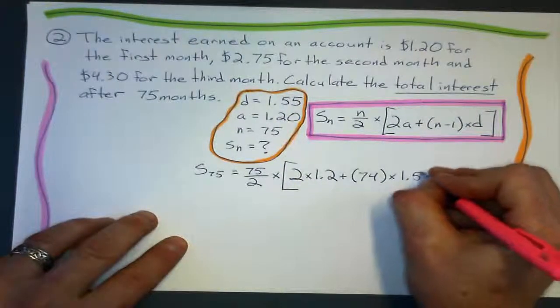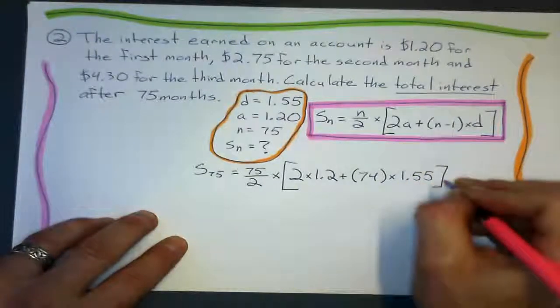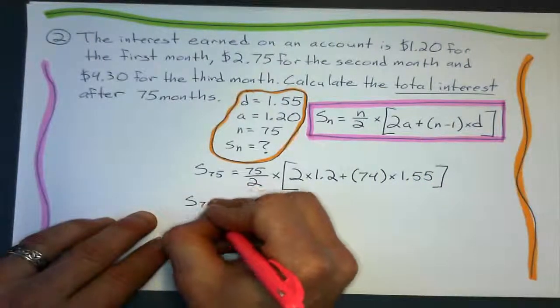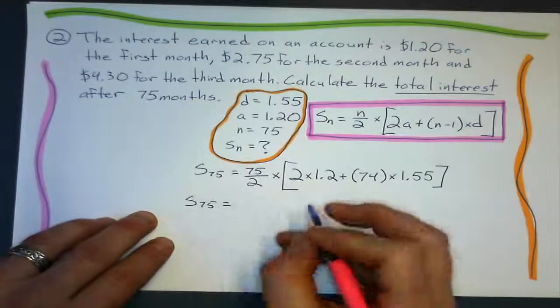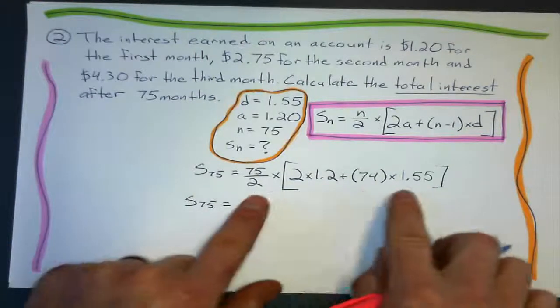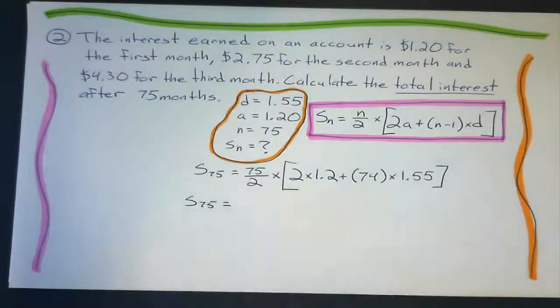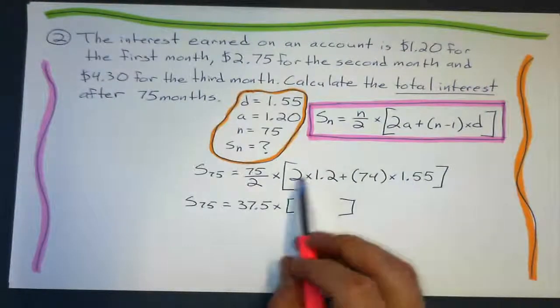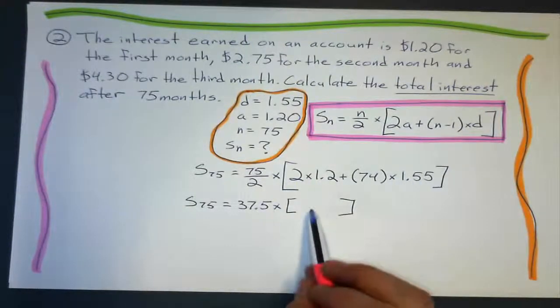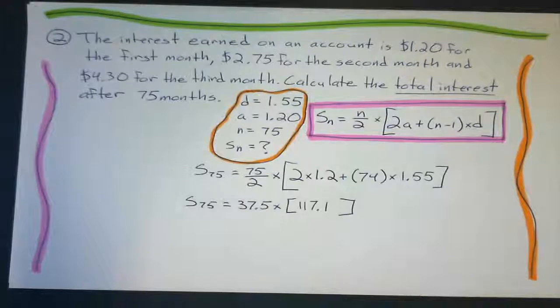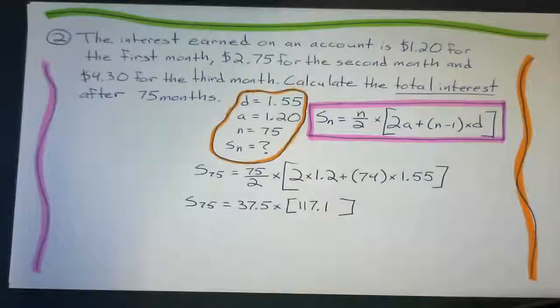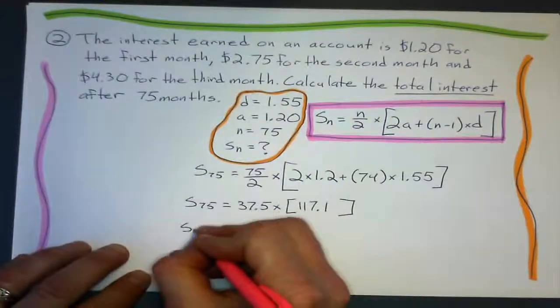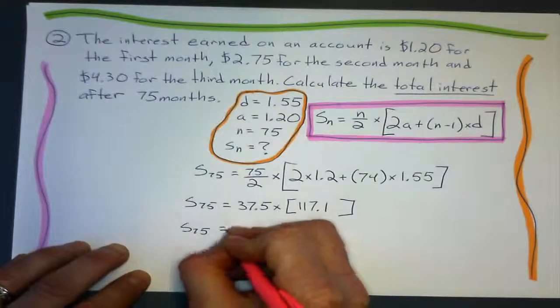Now, this step we can do all on the calculator as well. But I'll just clean it up into two steps. Half of 75, I clean all this up inside the brackets and I get a value for that. So I get 117.1 inside the brackets. So after 75 months, this person will have earned a lot of interest.